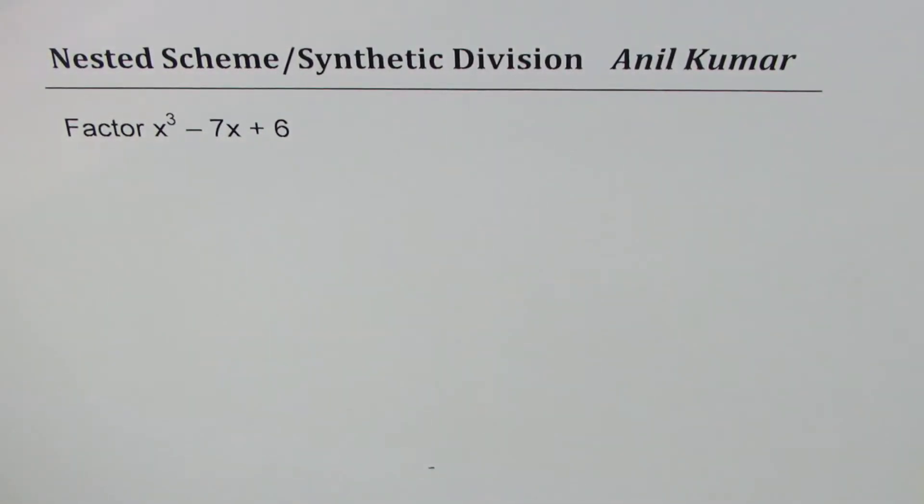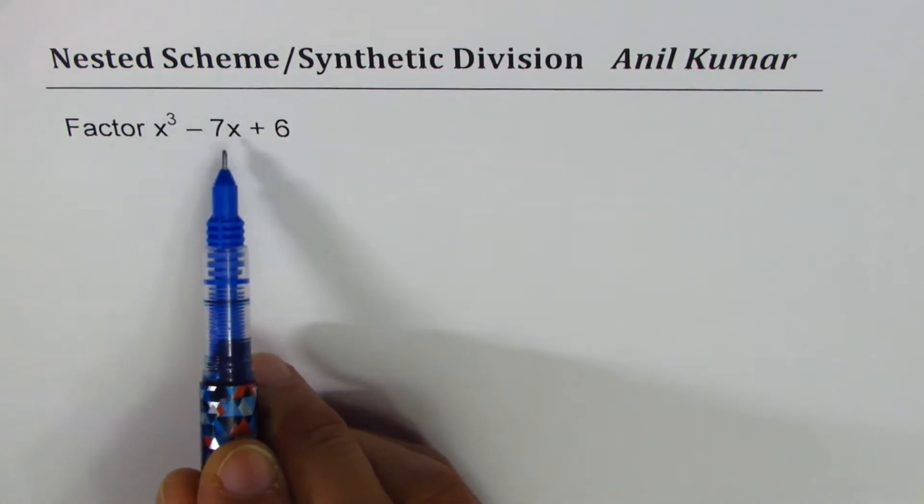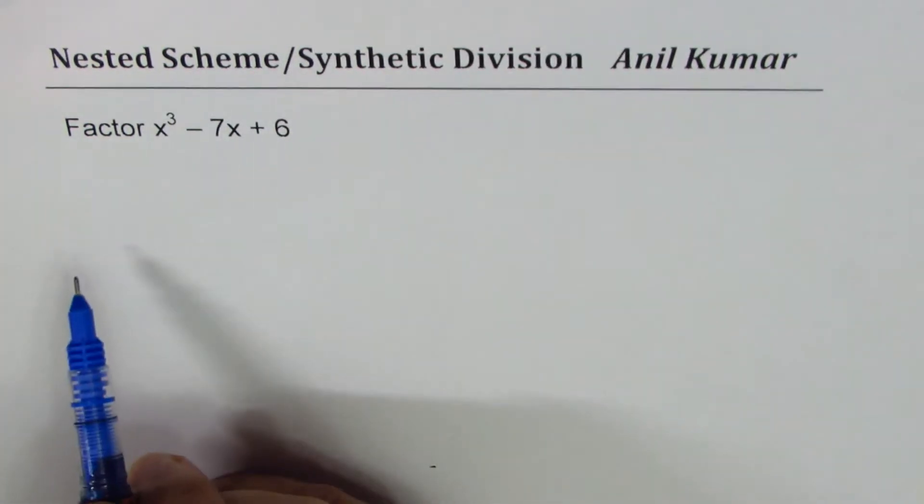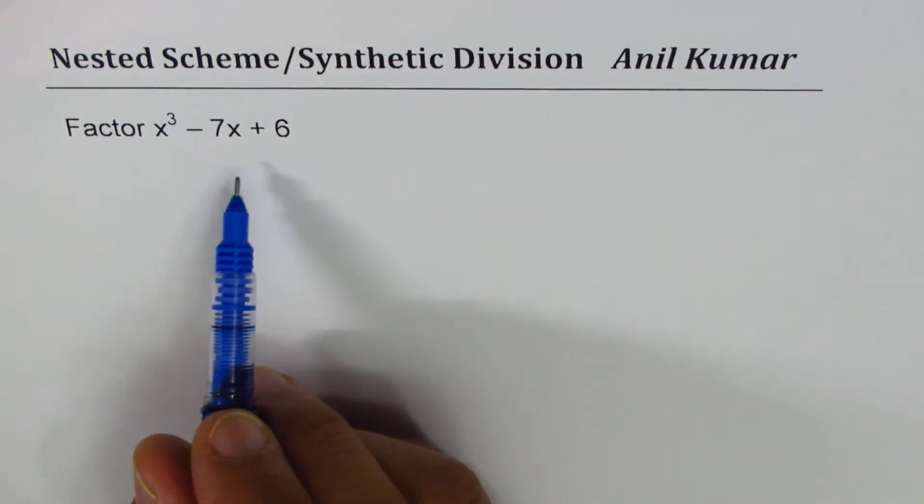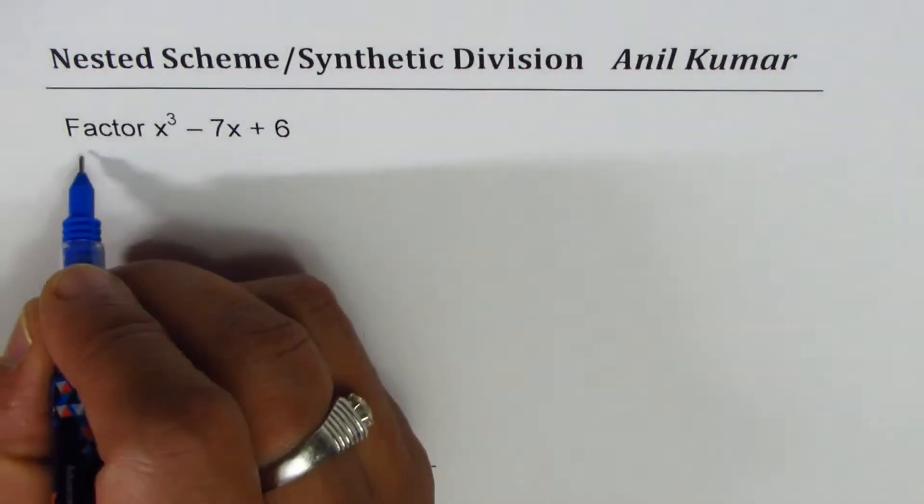I'm Anil Kumar and in this video we'll try to understand how to factor a cubic equation. So I have an equation here to factor: x cubed minus 7x plus 6. First step is to find possible factors.